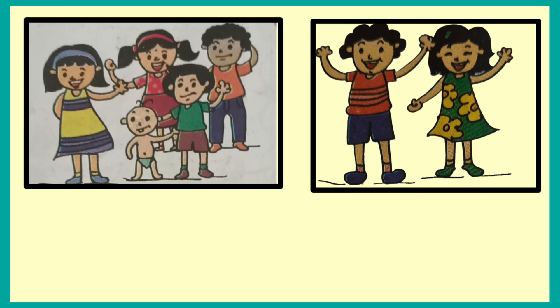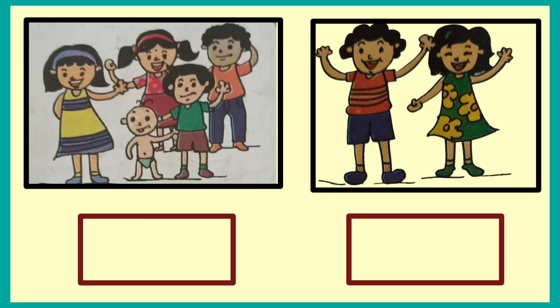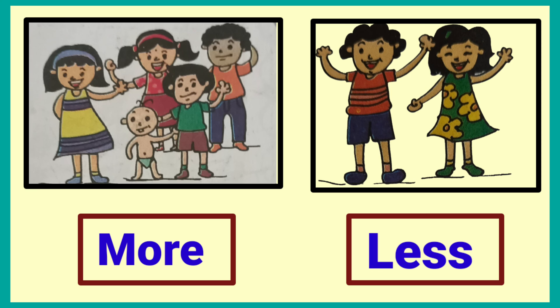In the first picture, there are more children than in the second picture. The second picture has less children than the first picture. First picture: more children. Second picture: less children.